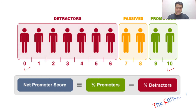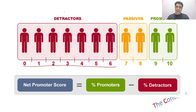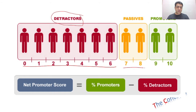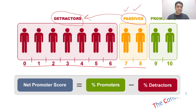Some customers may answer three, some may answer eight, some may answer ten. All the people who have answered from 0 to 6 are known as detractors — they are not going to recommend your product to any family or friend. Everybody who answered 7 or 8 will be known as passives. They will not refer your product to anyone, but at the same time they will not be detracting customers from your product either — they are neither recommending nor discouraging.